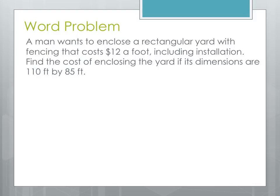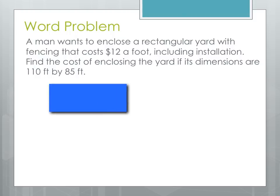Now let's look at a word problem. A man wants to enclose a rectangular yard with fencing that costs $12 a foot including installation. Find the cost of enclosing the yard if its dimensions are 110 feet by 85 feet. Let's go ahead and draw a rectangle and plug in the dimensions: length 110 feet, width 85 feet. We're fencing in this yard — going around the edges — so that tells us we need to find the perimeter.